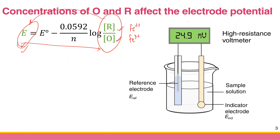What we are doing here is using two electrodes, because to measure the potential we cannot measure the potential of one electrode alone — we need two electrodes. The two electrodes are the reference electrode and the indicator electrode.